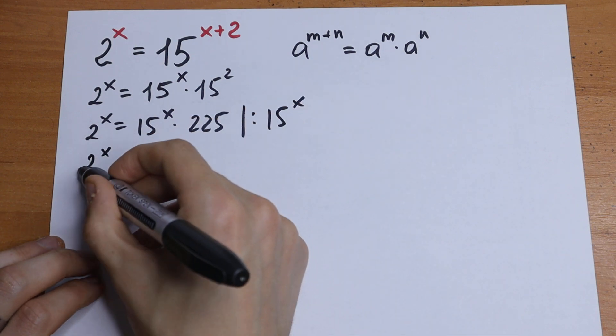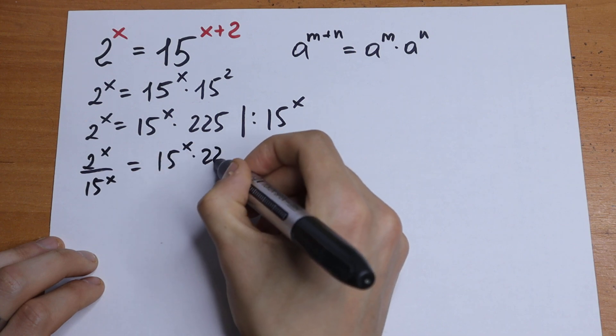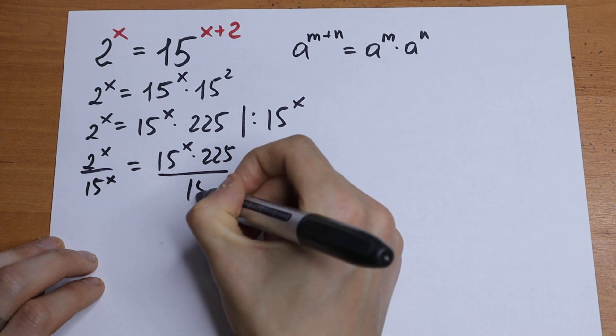So we will have 2 to the power x over 15 to the power x equal to 15 to the power x times 225 over 15 to the power x.